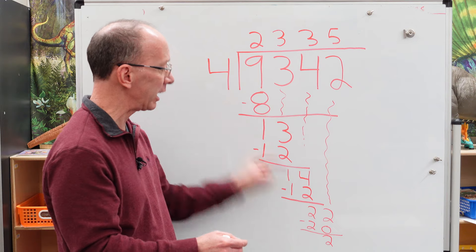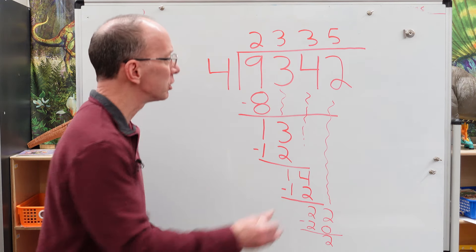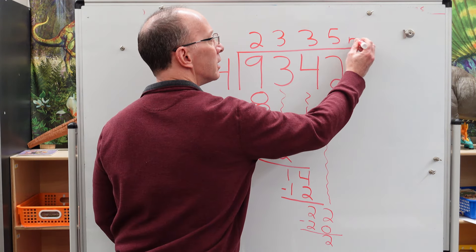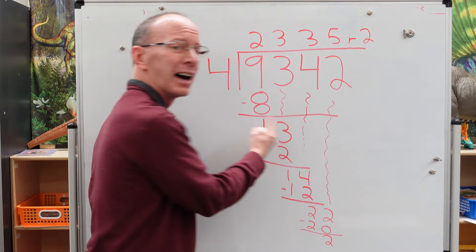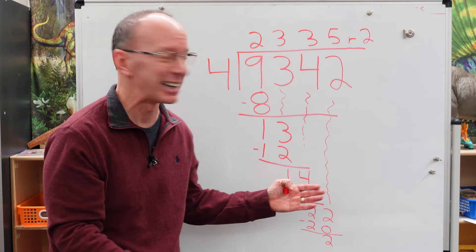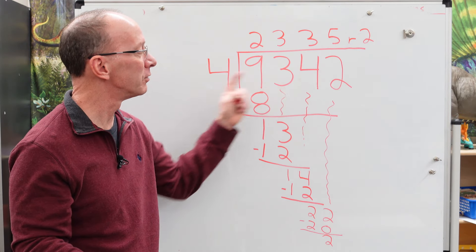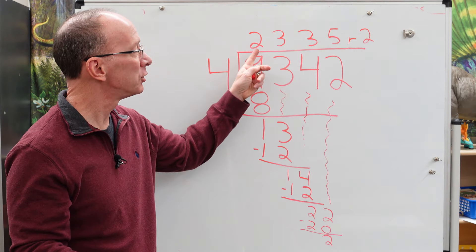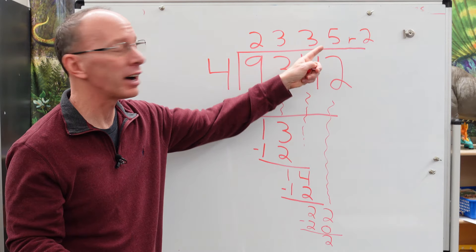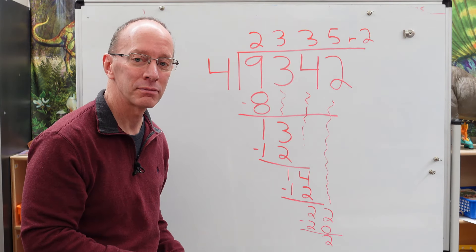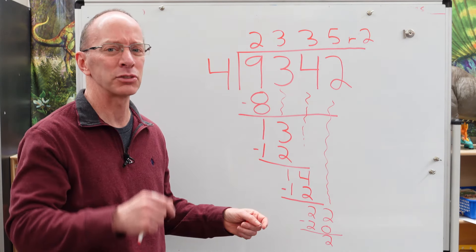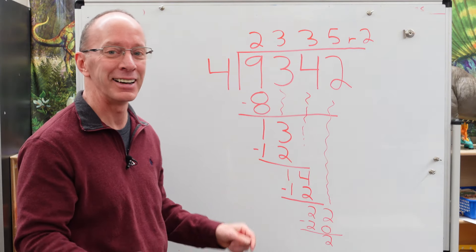So I have a remainder of two. So I put this right over here. I gave you a gigantic number, didn't I? So our problem right here is 9,342 divided by four is 2,335 with a remainder of two. Hey, you're ready to do another one. Let's make the next one just a little bit easier. All right, let's do it.